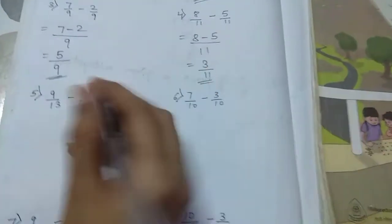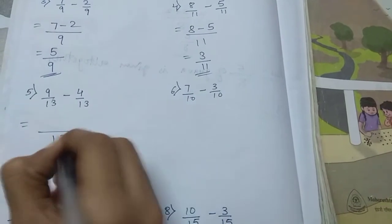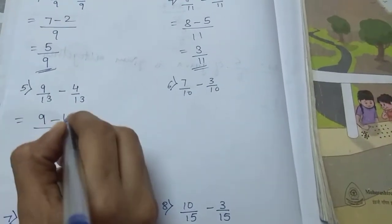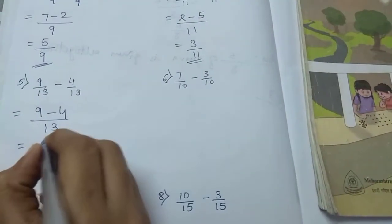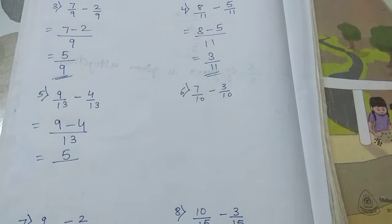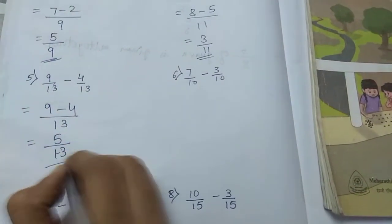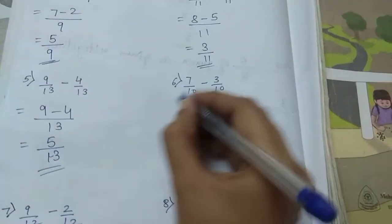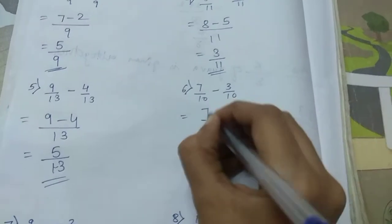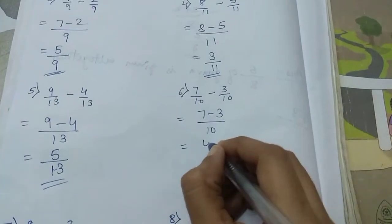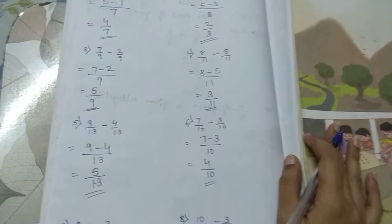Now fifth one. Again you all can see denominators are same. So 9 minus 4 will give us 5 by 13. Sixth one, 7 by 10 minus 3 by 10. So all sums are similar only. These all are same.